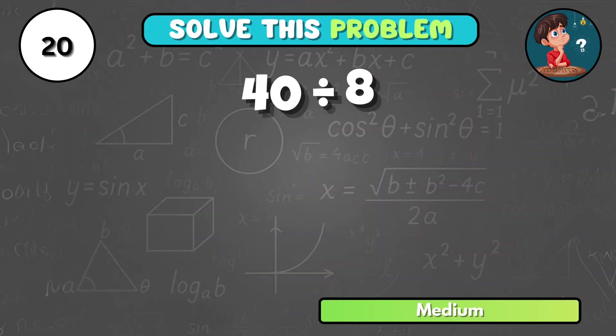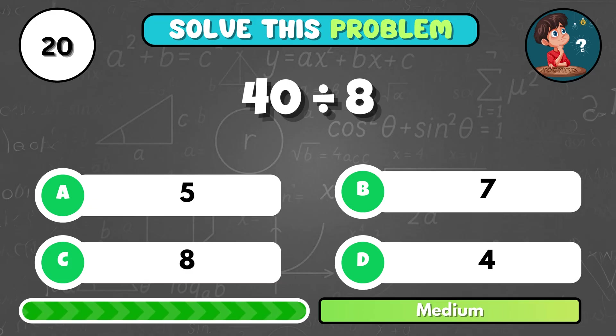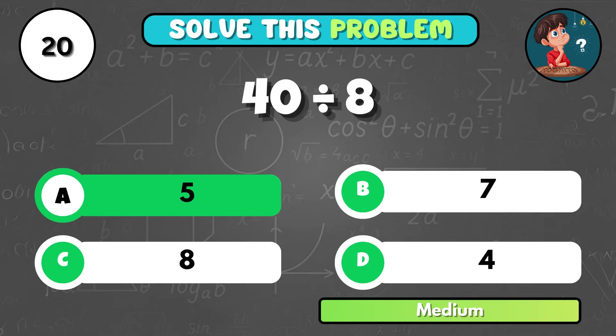Can you work out 40 divided by 8? It's A, 5.